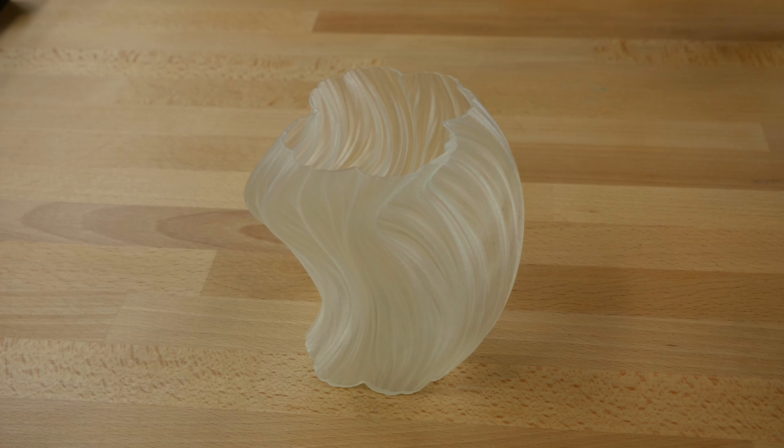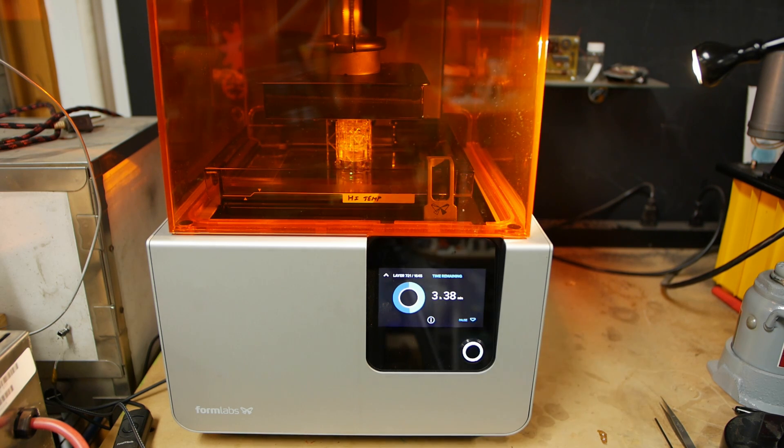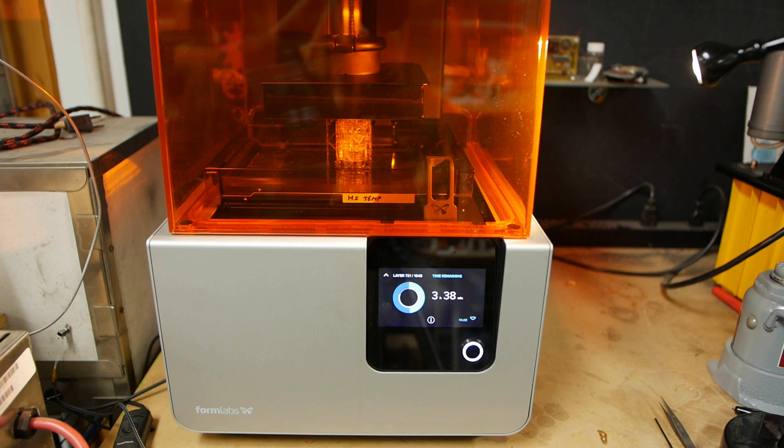Now of course it doesn't happen all at once like is shown in the time-lapse. In slightly closer to real-time you can see what the machine actually does. It actually picks the part up out of the resin for each layer and then puts it back in and makes the next layer.